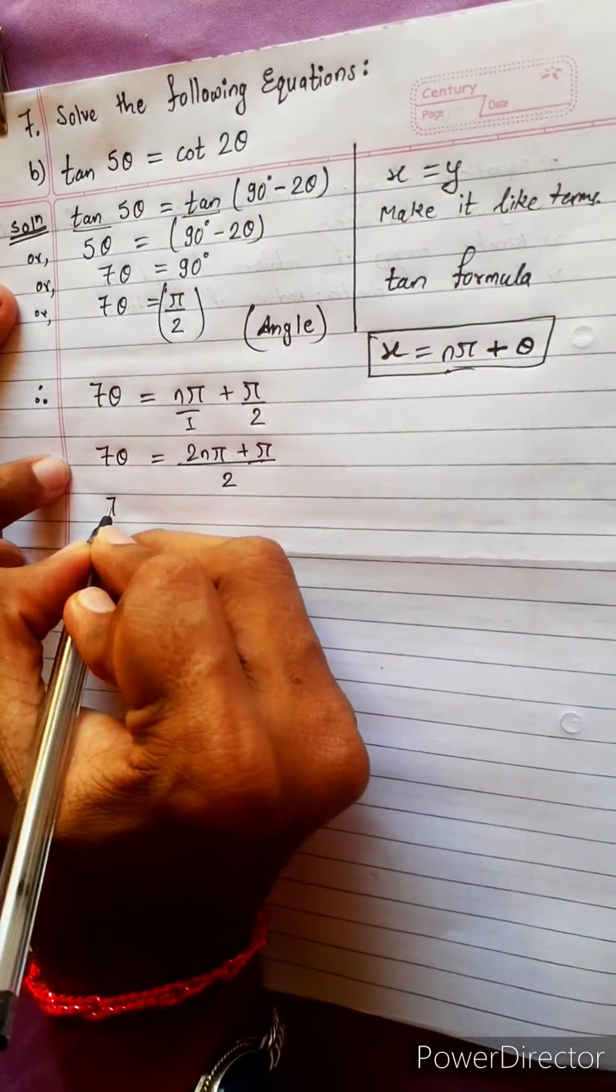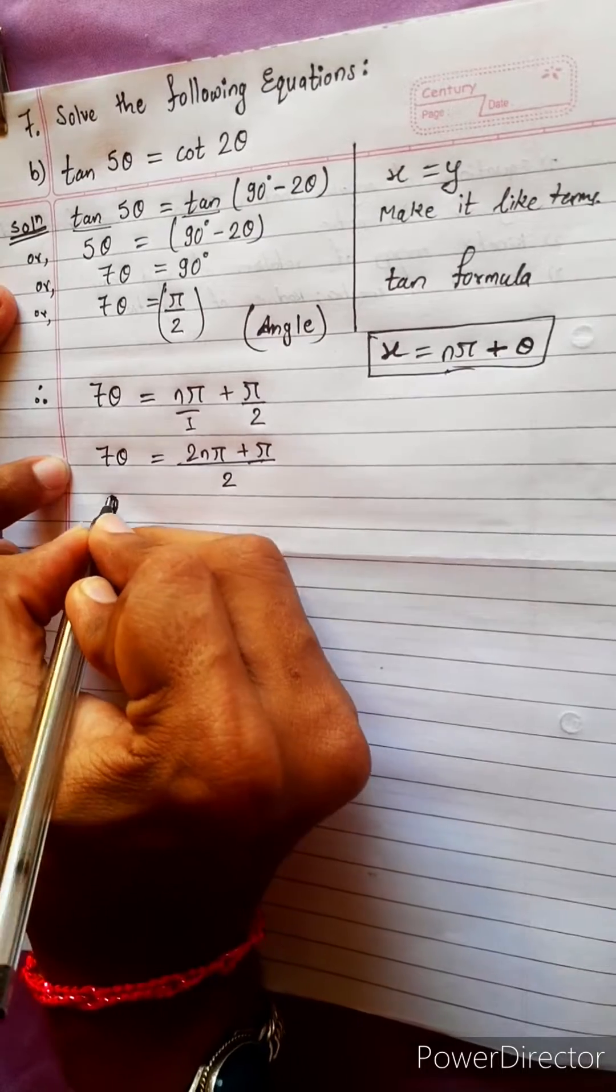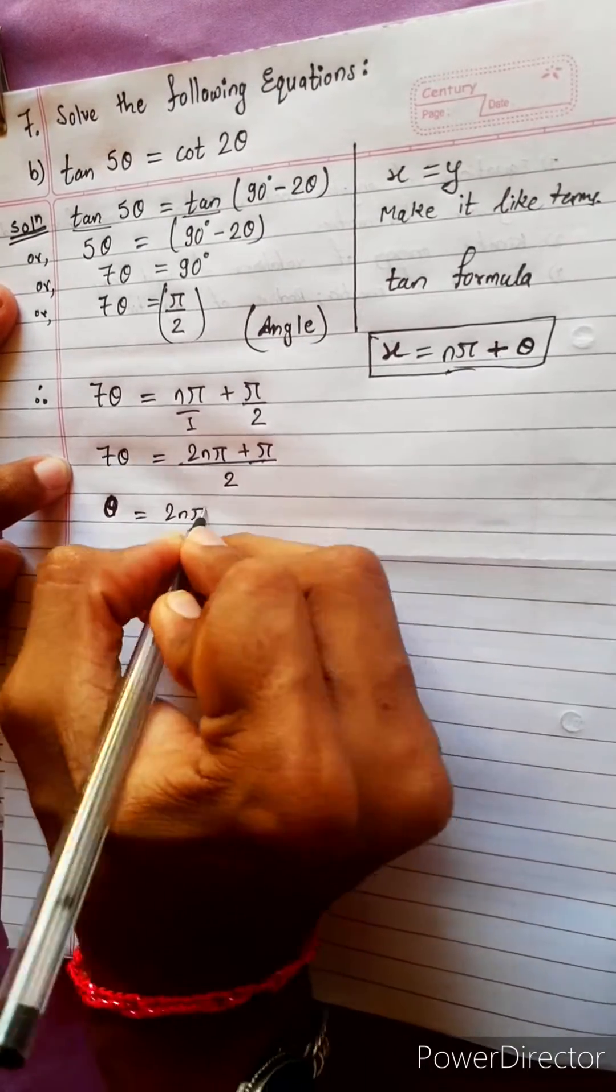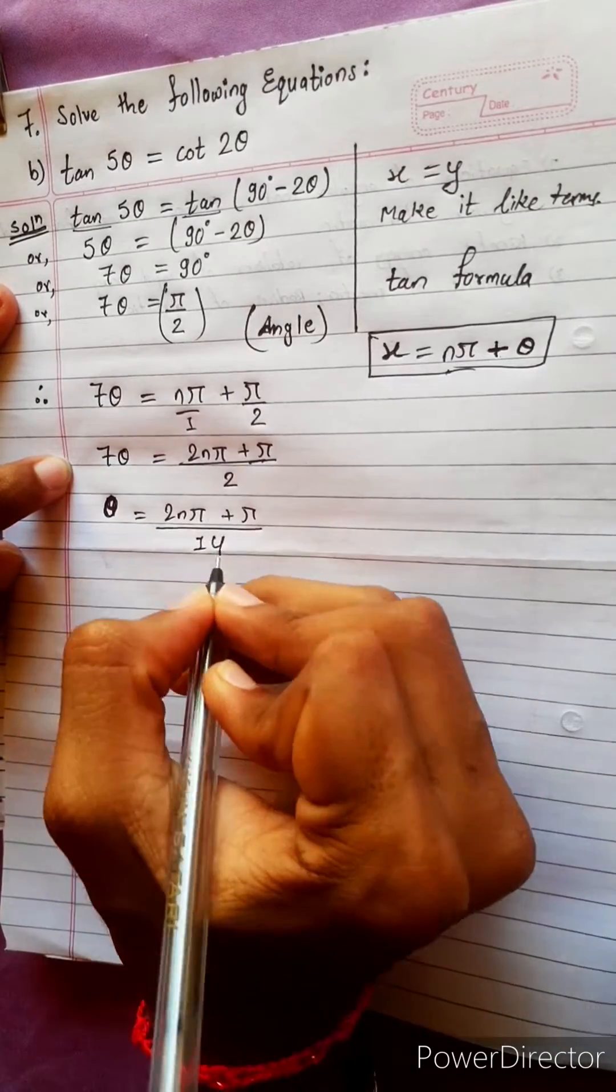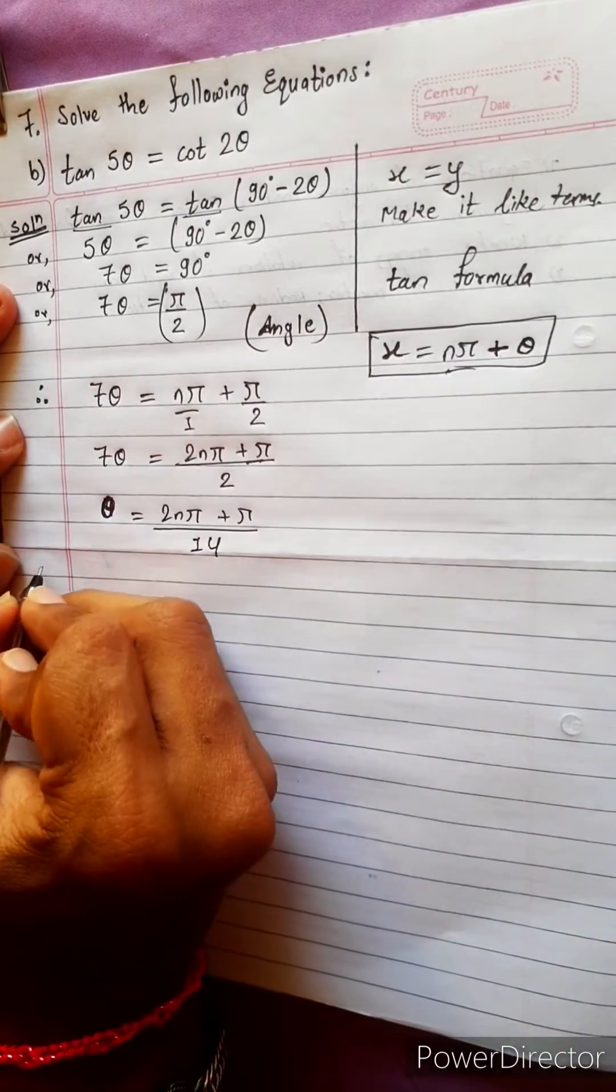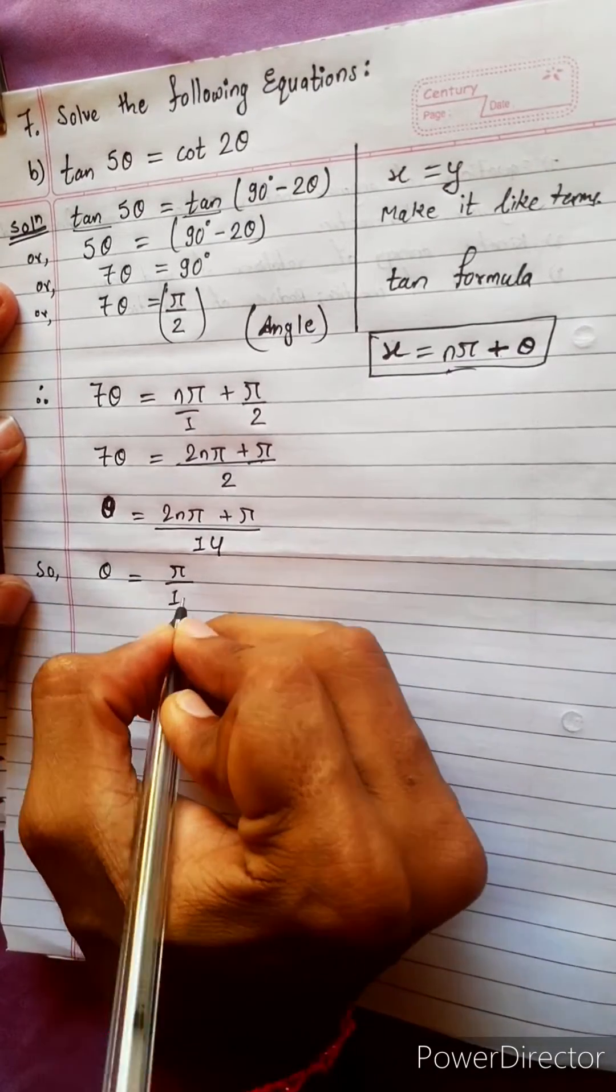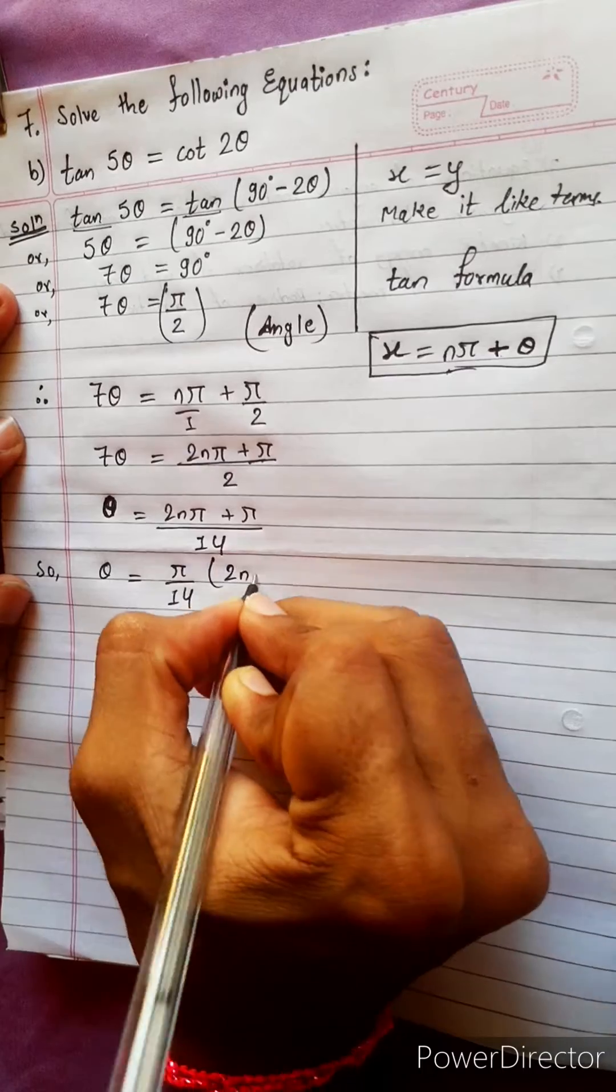Now what can we do? I think we can do one thing. θ remaining as it is, 7 send to another side. 2nπ plus π divided by 7. We can do this. Then after we can take common. So θ equals to π by 14. If we take common, then we will have 2n plus 1.